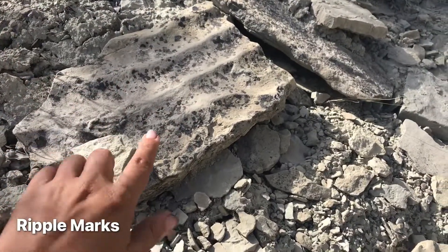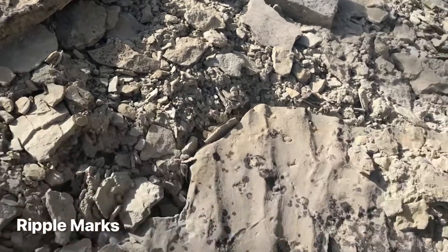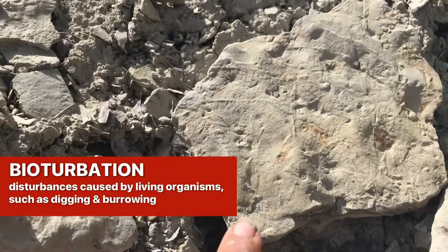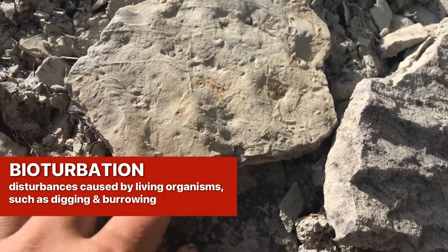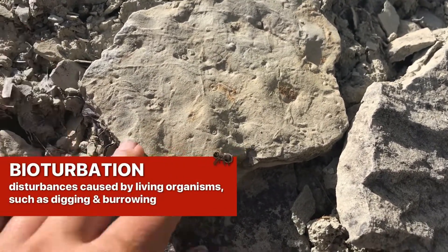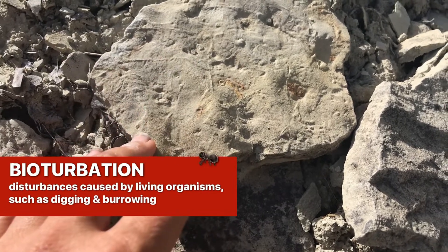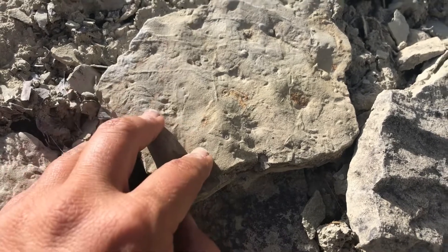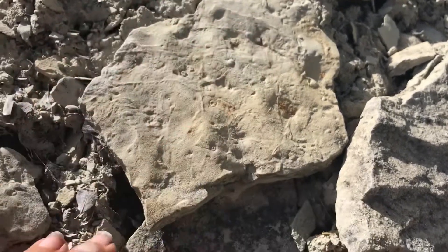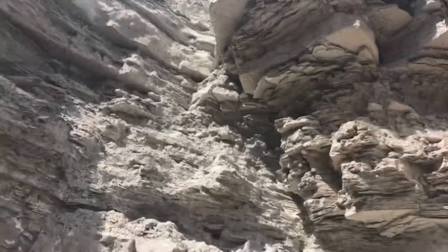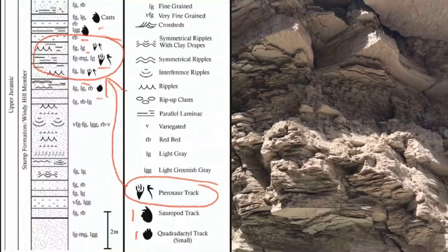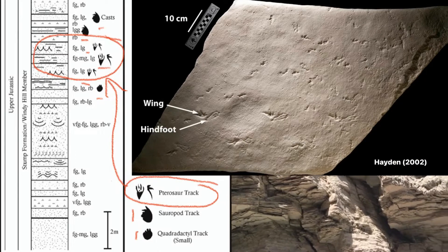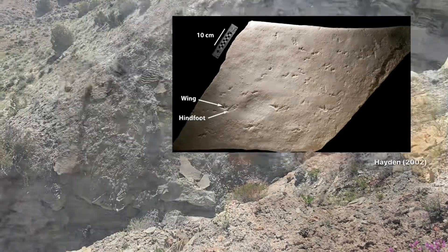These were certainly near-shore deposits, and we can tell because of the ripple marks and the markings of bioturbation. Bioturbation refers to the markings left behind from the activities of different life forms — anything from an arthropod digging or walking across the surface to dinosaurs tearing up mud and making impressions. Beds of similar composition and age have actually yielded pterosaur trackways and sauropod tracks.